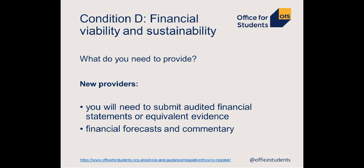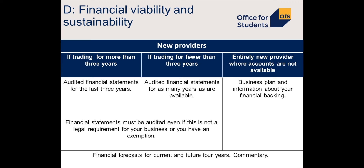For new providers, this condition requires a full set of information, but what this looks like depends on how long you've been trading and running higher education. You must submit audited financial statements to us regardless of whether this is a legal requirement for your business or whether you have an exemption from filing at Companies House or with the Charity Commission. We require financial statements to be audited by an independent external auditor before submission. If you haven't submitted or audited financial statements before, we have set out in our advice for applying the details of what must be included. Please share this guidance with the company who will audit your accounts.